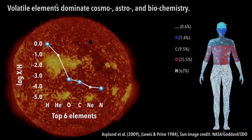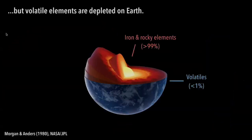First, a brief motivation for why we're doing this. We're really interested in looking at the solid carriers for different elements that make up life in the human body. The top four contributors in terms of elements to the human body are also some of the top six elements that dominate cosmochemistry — most abundant in the universe — such as hydrogen, oxygen, carbon, and nitrogen. However, we know that they are depleted on Earth, making up less than 1% of the total mass of the Earth, and they're really regulated to the outermost skin of the Earth.